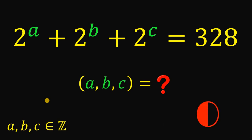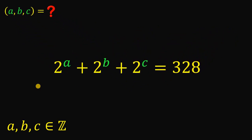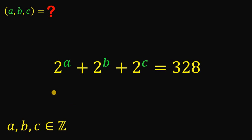And now, let's answer this question together. So our goal is to solve for the values of A, B, and C wherein it satisfies this equation: 2 raised to A plus 2 raised to B plus 2 raised to C equals 328. Also, take note that A, B, and C are all integers. There are a lot of ways to answer this kind of question, but here is one possible solution.